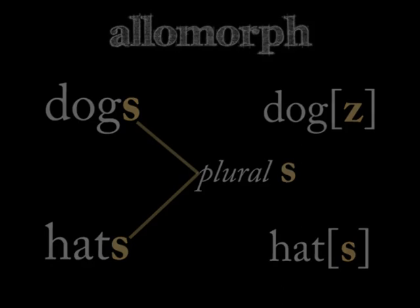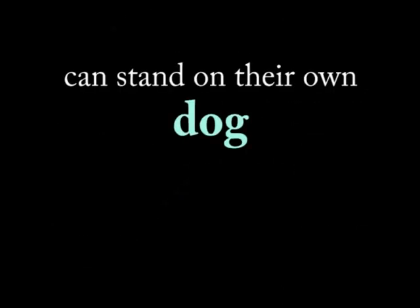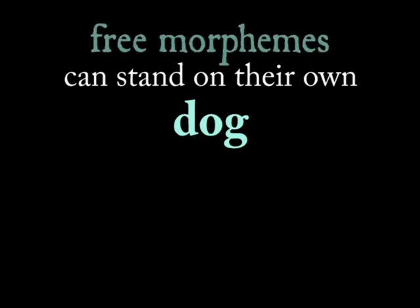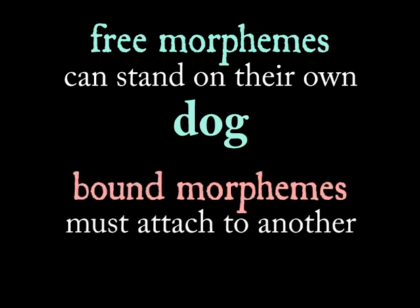There are different types of morphemes. There are morphemes that can stand on their own, like the word 'dog'. These are known as free morphemes. A free morpheme doesn't have to be attached to another morpheme to be used.